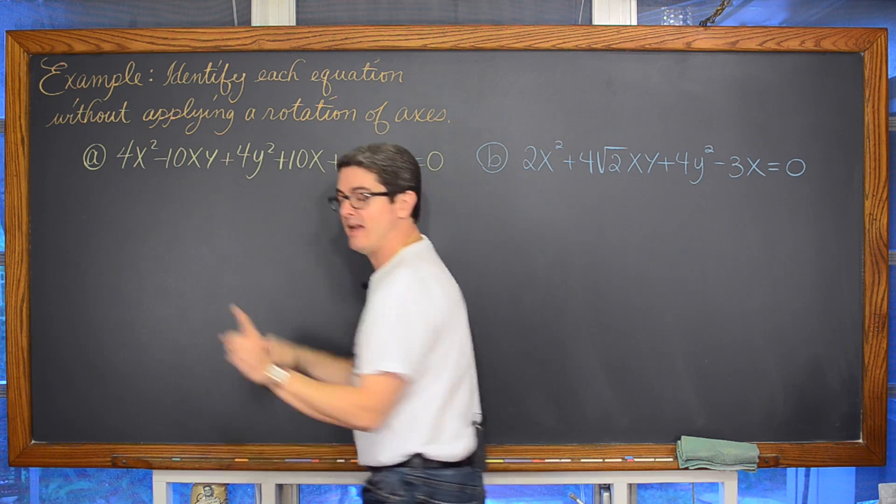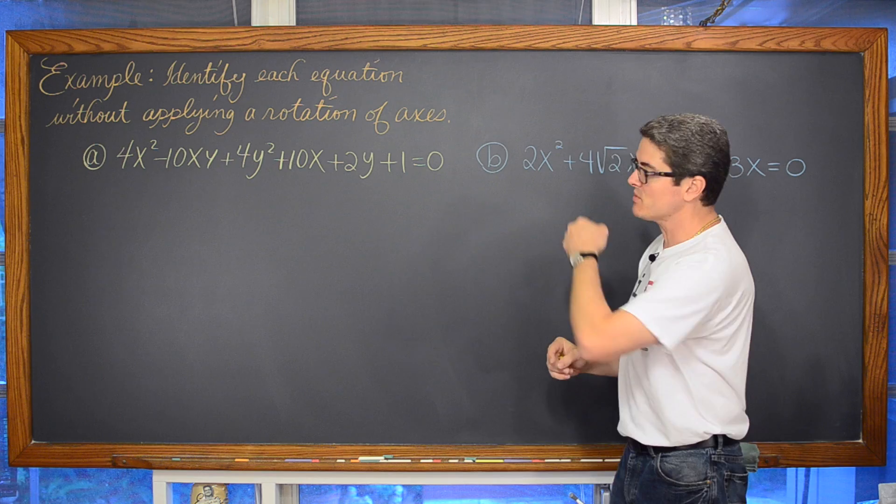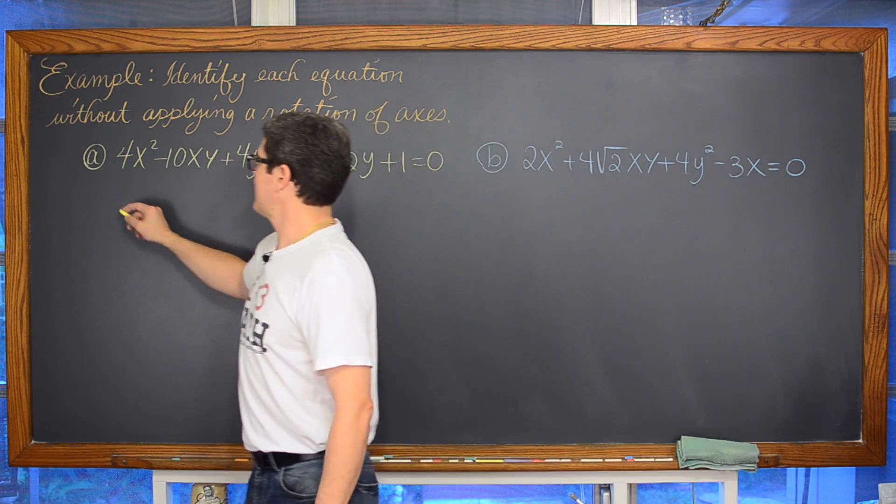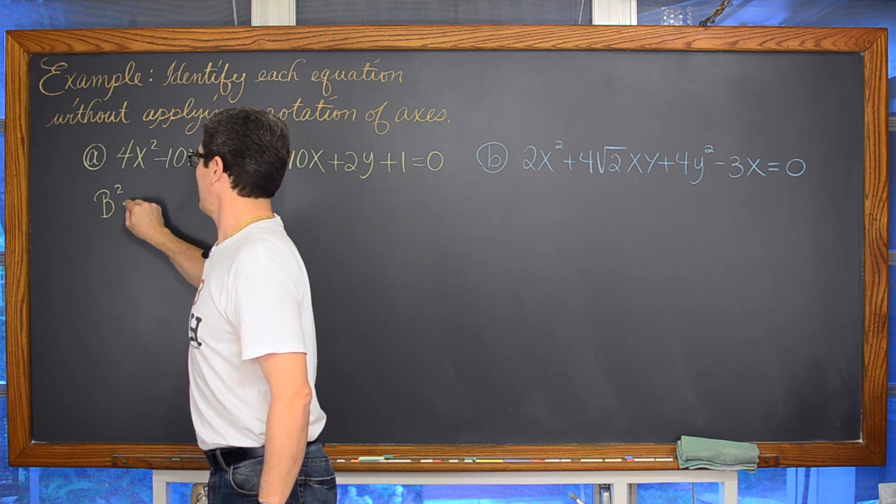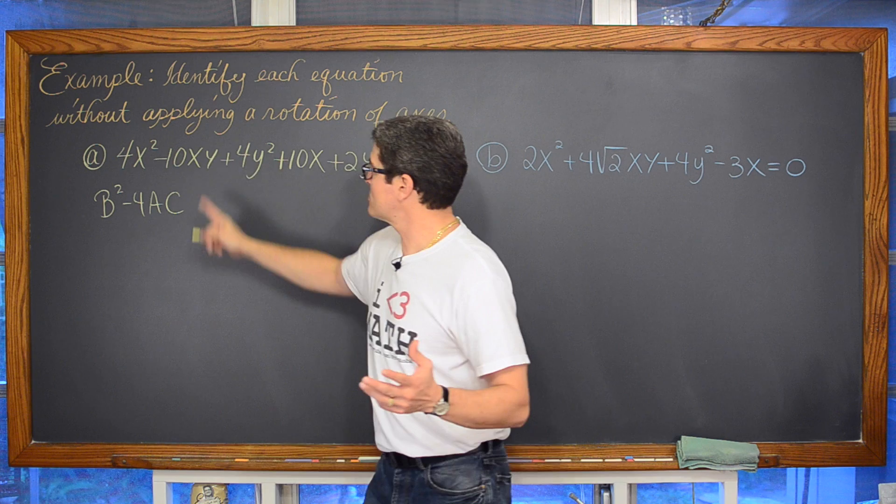They both have the same coefficient and those two coefficients have the same sign so I would say that was going to be a circle. But there is an xy term and you can't do that. So we've got again that formula b squared minus 4ac.